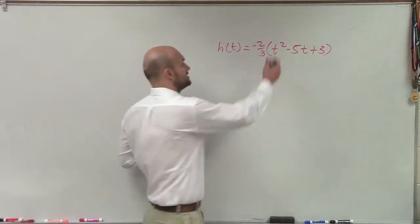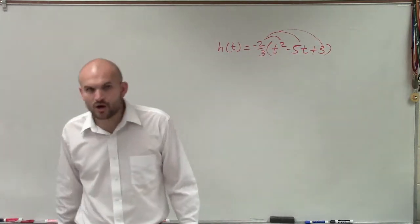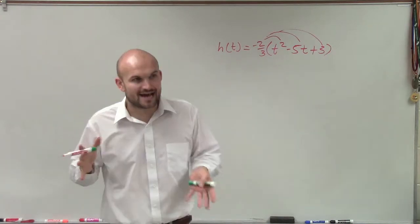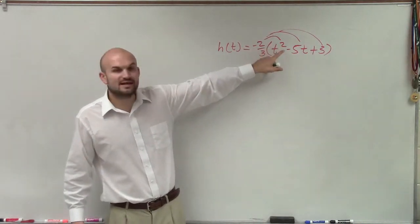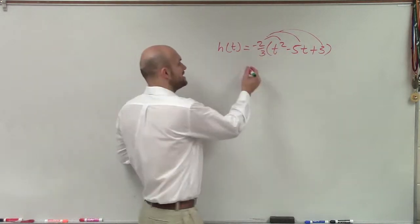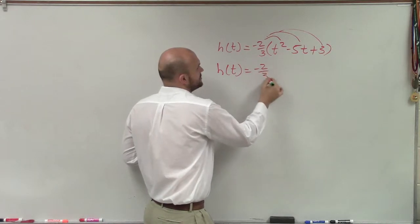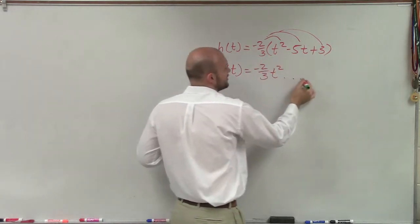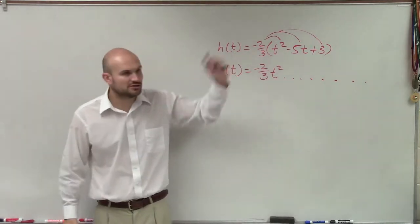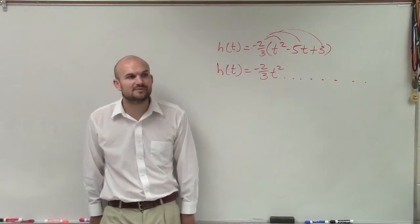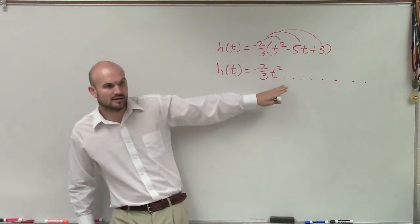What we need to do is distribute this to every single one of these terms. But remember, all we care about is the leading term, not every single term. So when I multiply this, I know that the t² is still going to be the leading term. So I get h(t) equals -2/3 t², and I don't even care what the rest of the polynomial is. It doesn't matter for end behavior. All we're concerned about for end behavior is that leading term.